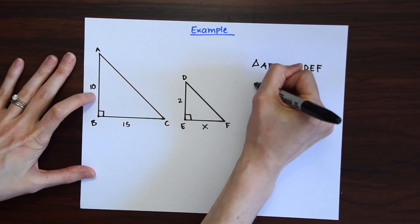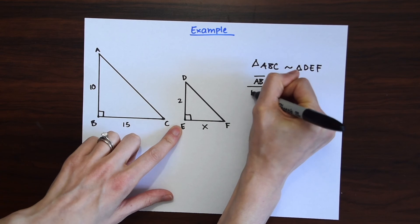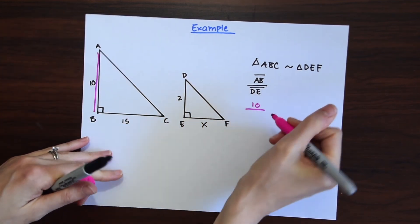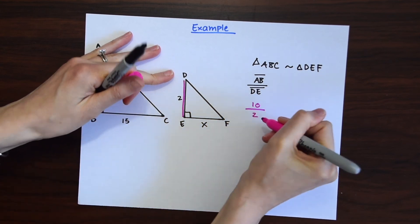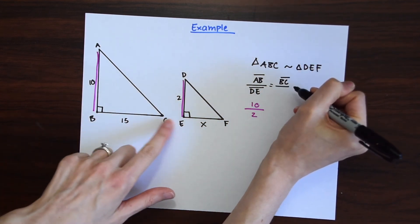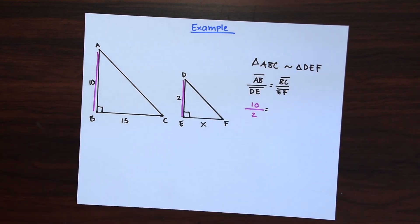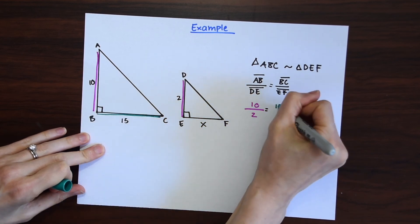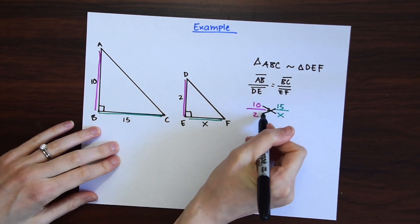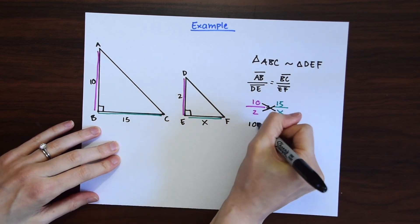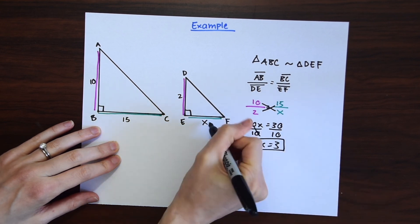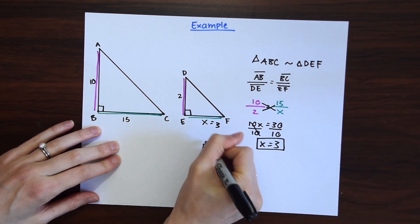We set up a proportion using the corresponding sides: AB over DE equals 10 over 2. We set this equal to the ratio of the bases: BC over EF, which is 15 over X. Cross-multiplying gives 10X equals 30. Dividing both sides by 10, we get X equals 3. So EF equals 3.